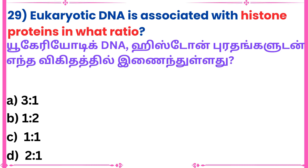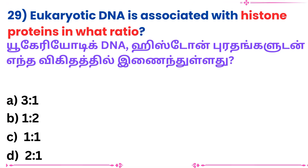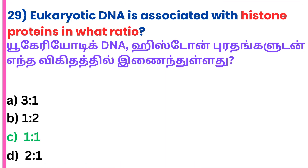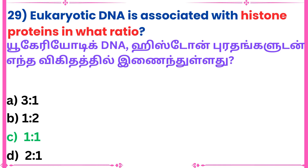Twenty-ninth question: Eukaryotic DNA is associated with histone proteins in what ratio? Answer: 1 to 1.